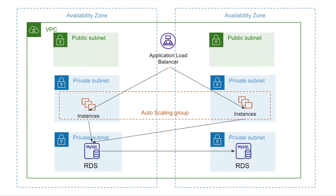The next layer is called the application layer, where the magic happens for every application. This is a completely private layer and cannot be accessed over the internet. Here the main application is placed, which actually serves the request and delivers the content. Then there is the last layer, which is the database layer. The application stores data on this database and uses it to handle requests. This is also a private layer.